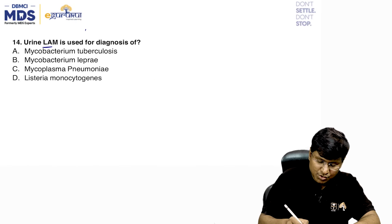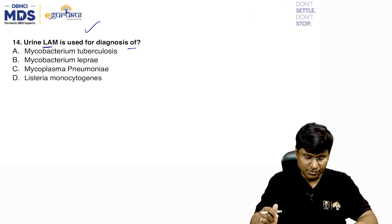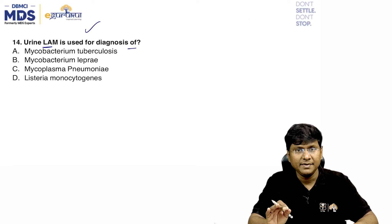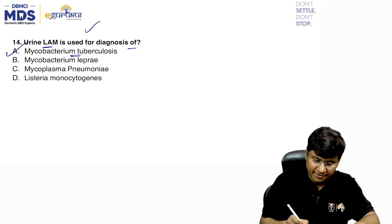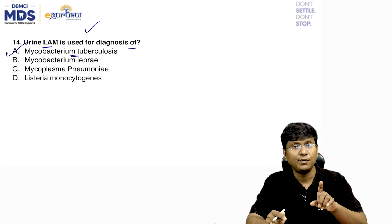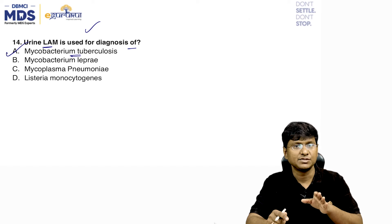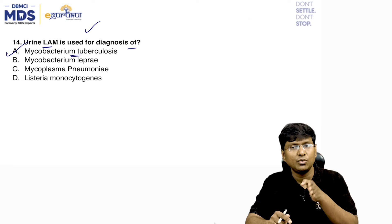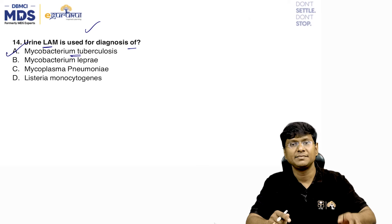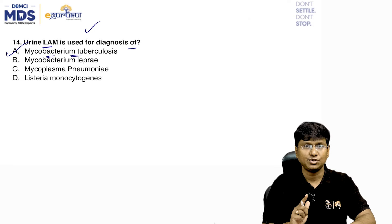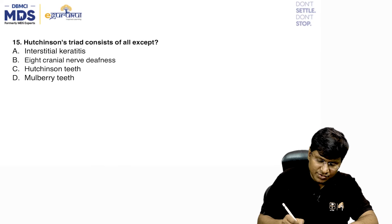Next question: urine LAM is used for diagnosis of which — Mycobacterium tuberculosis, Mycobacterium leprae, Mycoplasma pneumoniae, or Listeria monocytogenes? Urine LAM (lipoarabinomannan) is useful for diagnosis of Mycobacterium tuberculosis. Urinary lipoarabinomannan allows detection of M. tuberculosis including extra-pulmonary or disseminated forms of the disease.